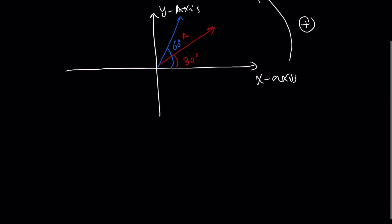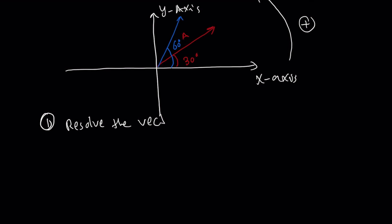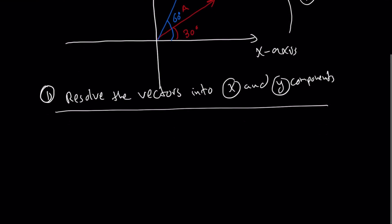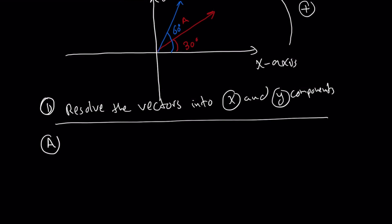In order to find the resultant, we need to follow a sequence of steps. Step number one: resolve the vectors into x and y components. So I'm going to take vector A and break it down to its component in the x direction — I'll call it Ax — and break it down to its component in the y direction — I'll call it Ay.